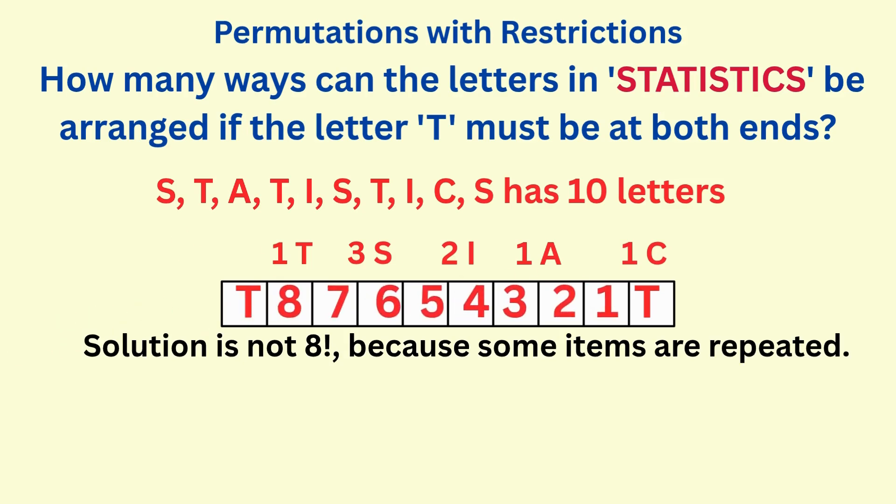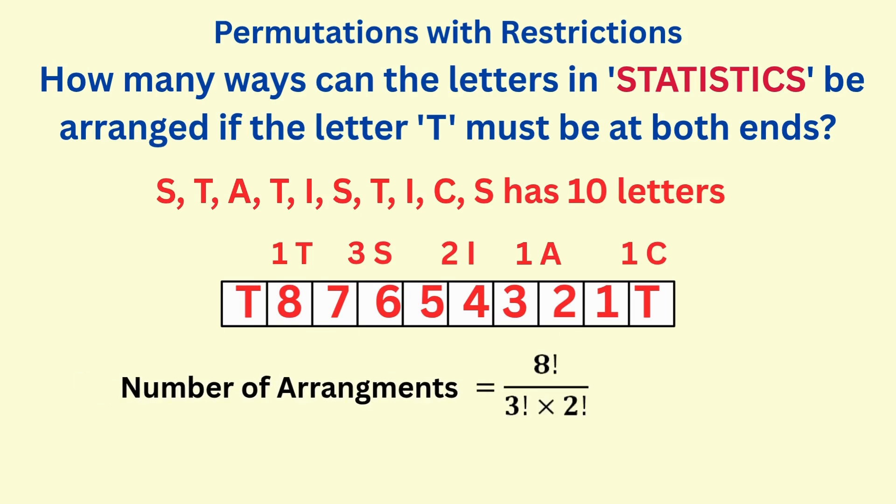So the number of arrangements for the remaining letters is not just eight factorial. Remember, we have to divide by the repeated items, or else we'll be double counting. So our solution is eight factorial divided by three factorial for the S, that's there three times.